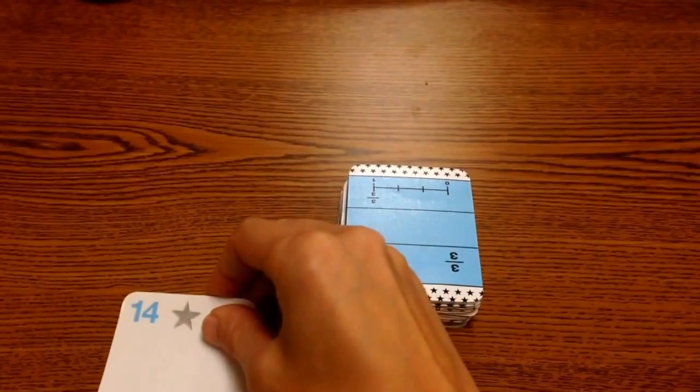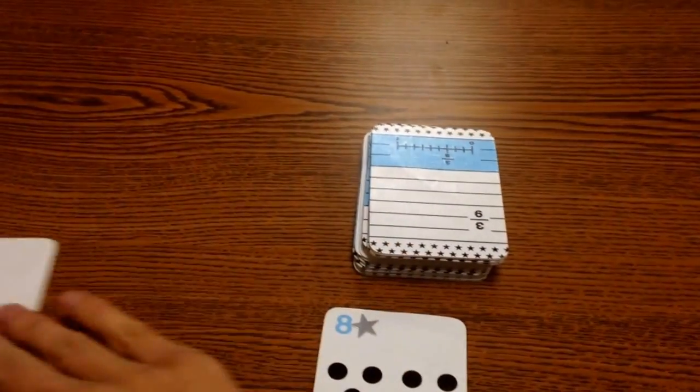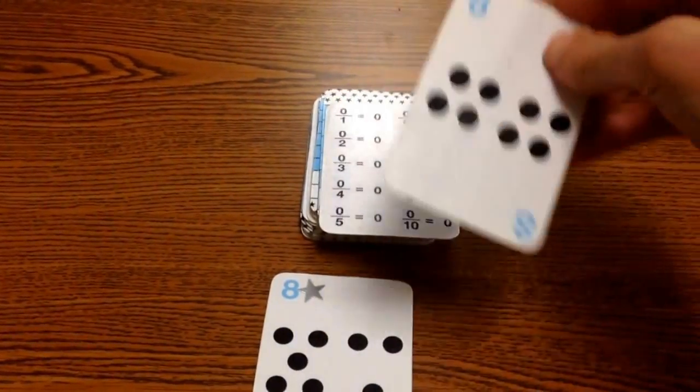I am going to show you how to play Addition Top It. The first thing you do is draw two cards. And right now we're not going to use the double digit cards.